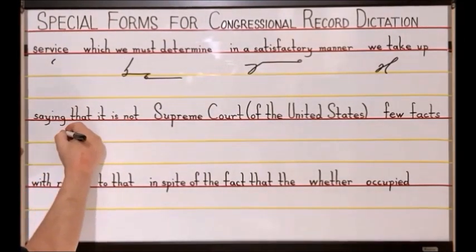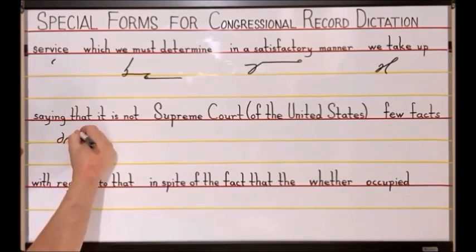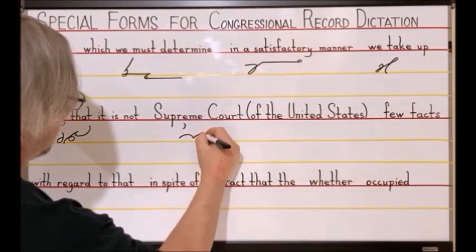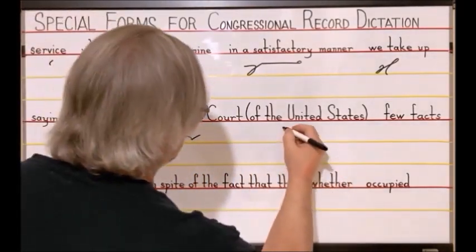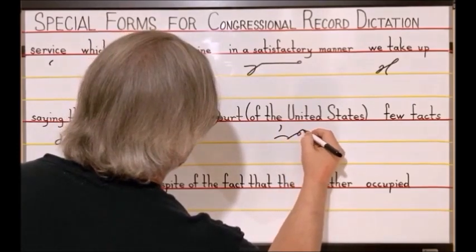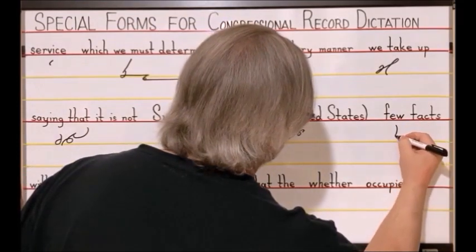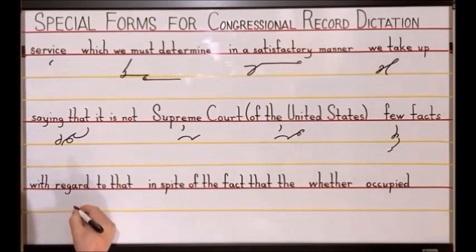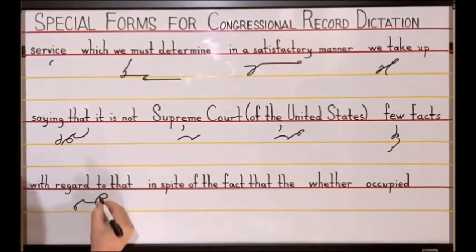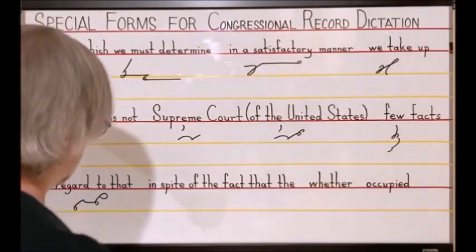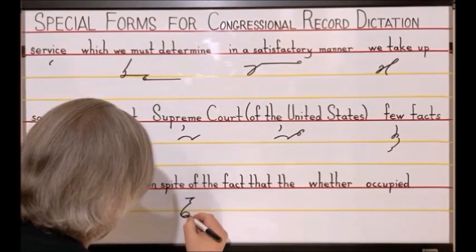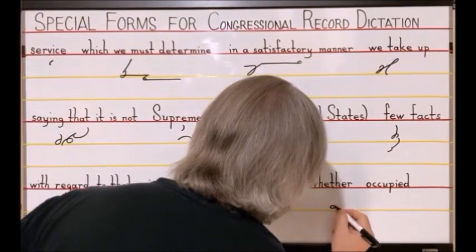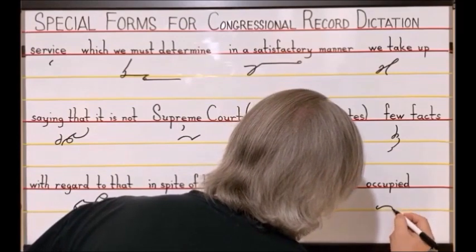Saying that it is not, S-A-T-H-A-T-S-N-T stroke, Supreme Court, S above the line, K-T, Supreme Court of the United States, say write S-K-T-E-U, few facts, F-E-U disjoined F-S, with regard to that, E-T-H-R-E-T-H-A, in spite of the fact that the, N-S-P long I disjoined F-T-H-A-T-H, whether, is E occupied, O-K disjoined T.